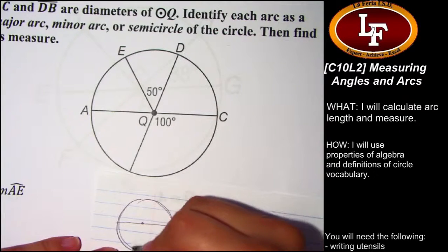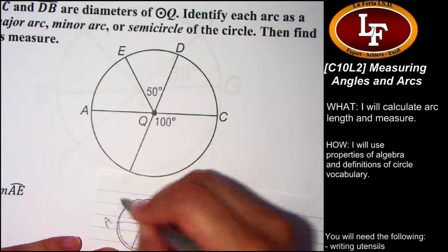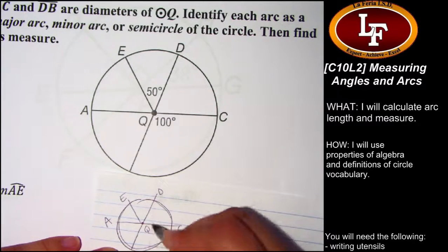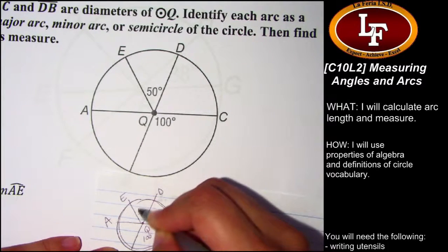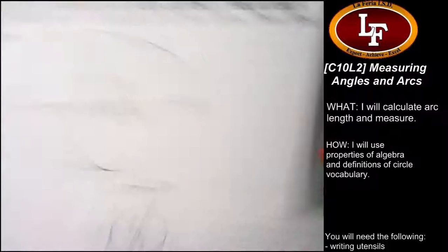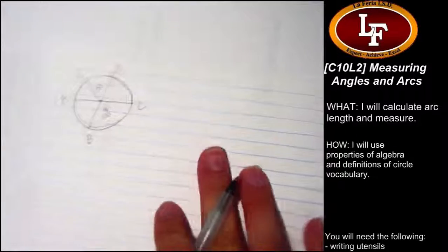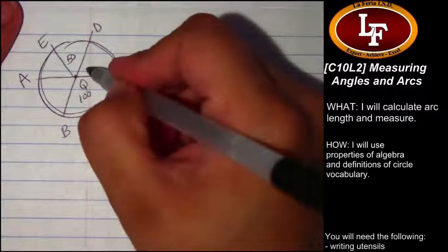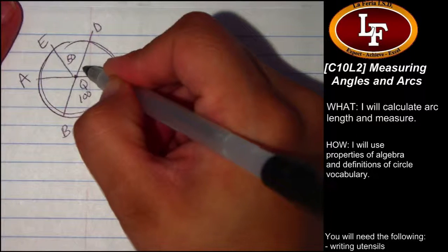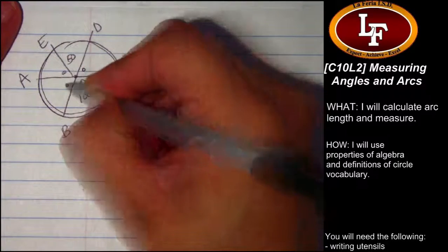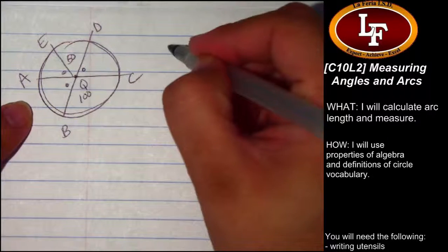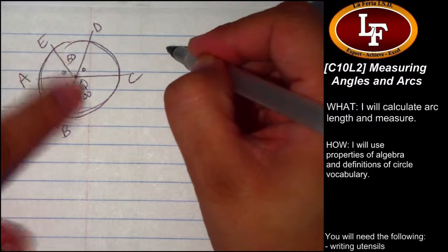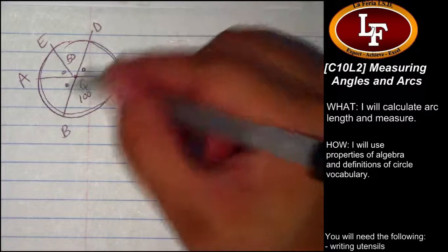I'm going to sketch this figure a little smaller so I can zoom in further. I'll copy this figure with points A, B, C, D, and Q. This angle is 100, this one is 50, and that's all I know right now. We're trying to find the measures of these missing angles, but I have three unknowns.